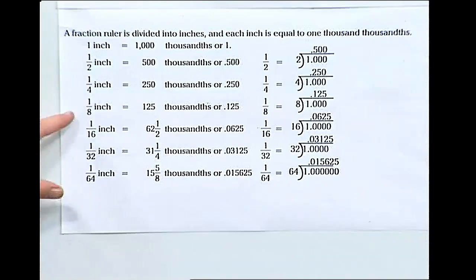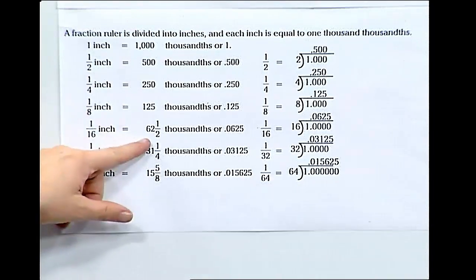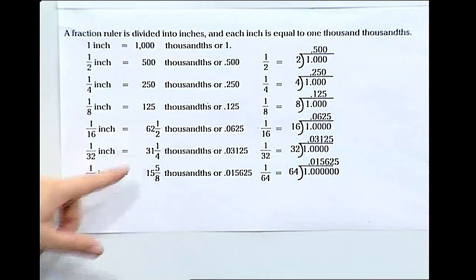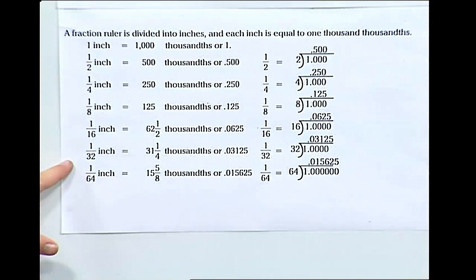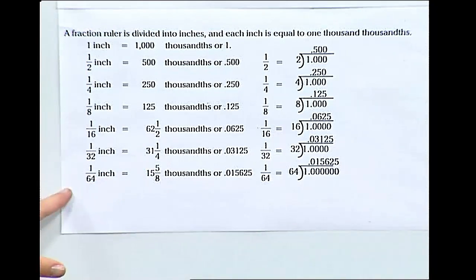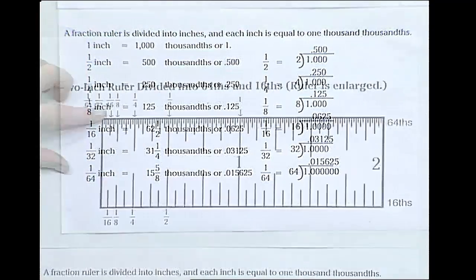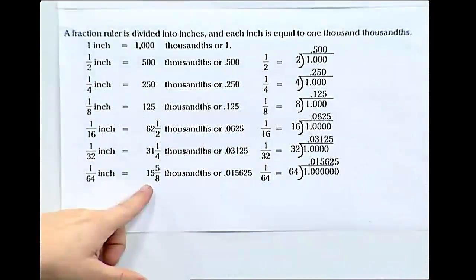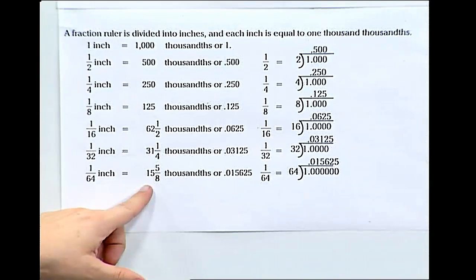As we continue down, we'll see a sixteenth of an inch becomes half as big. Sixty-two and one-half thousandths of an inch. A thirty-second of an inch becomes thirty-one and one-fourth thousandths of an inch. A sixty-fourth of an inch, this very, very small little space, becomes fifteen and five-eighths thousandths of an inch.